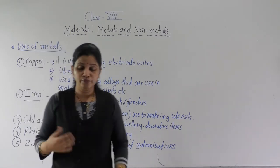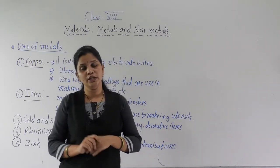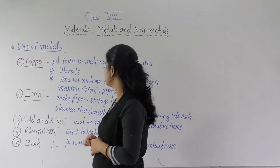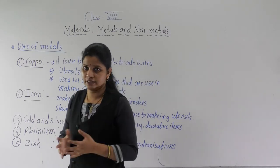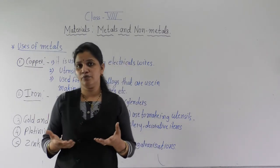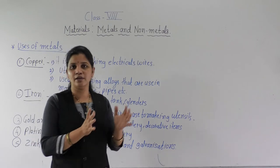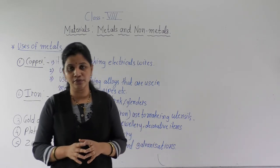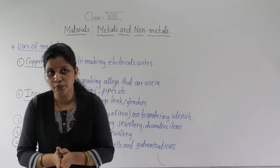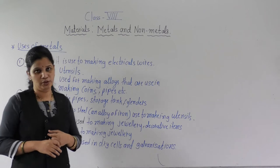The best conductor of electricity is silver, but commonly we are using copper. Now the second use — copper is used to make utensils. Plastics are also a substance, but we are not using plastics to make utensils. Some plastic boxes and plastic containers we do use, but metals have the characteristic of being good conductors of heat, and because of that, copper is used to make utensils.